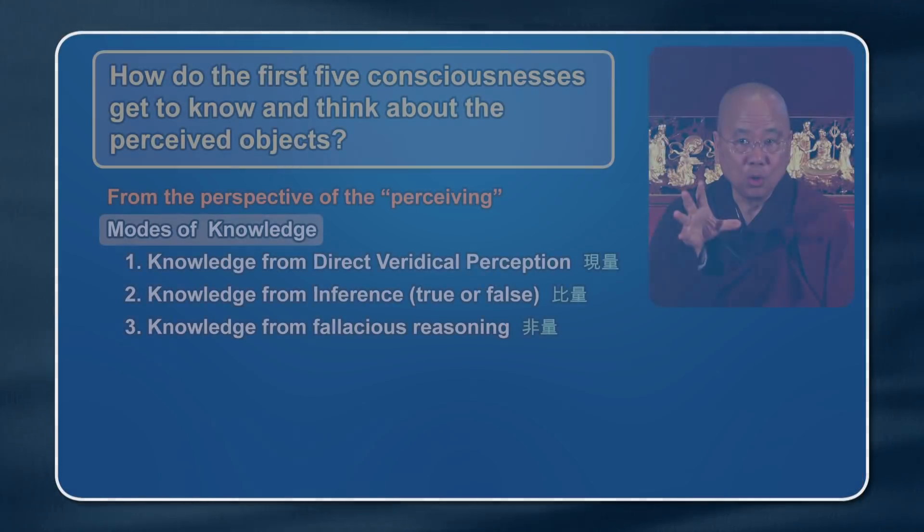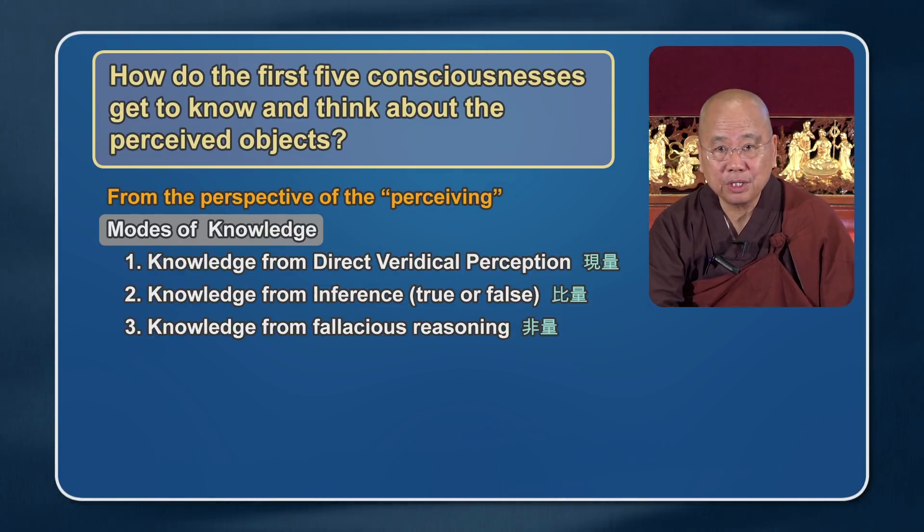We continue with verses summarizing the parameters of the eight consciousnesses, and we're still talking on the first five consciousnesses. Hopefully we'll finish the first five consciousnesses today with a simple summary. How do the first five consciousnesses get to know and think about the perceived objects? How do our first five consciousnesses know about our external world? Most knowledge comes from three sources.